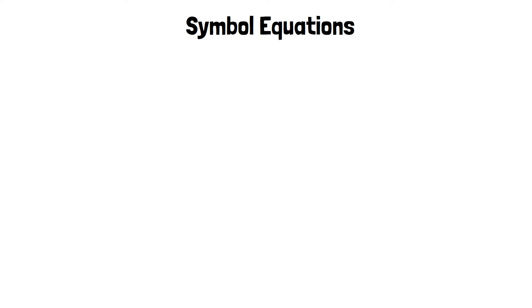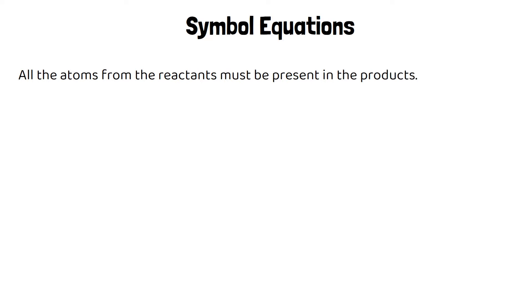In a symbol equation, because of the law of conservation of mass, we need to make sure that all the atoms from the reactants are present in the products. We can't lose any atoms or gain any extra atoms during the reaction.